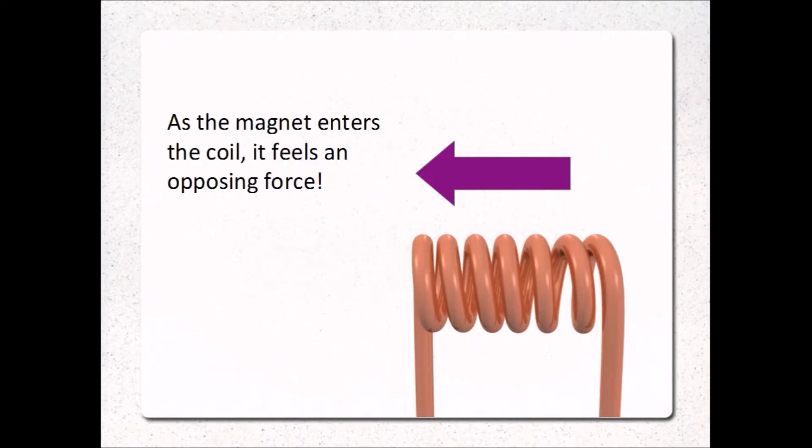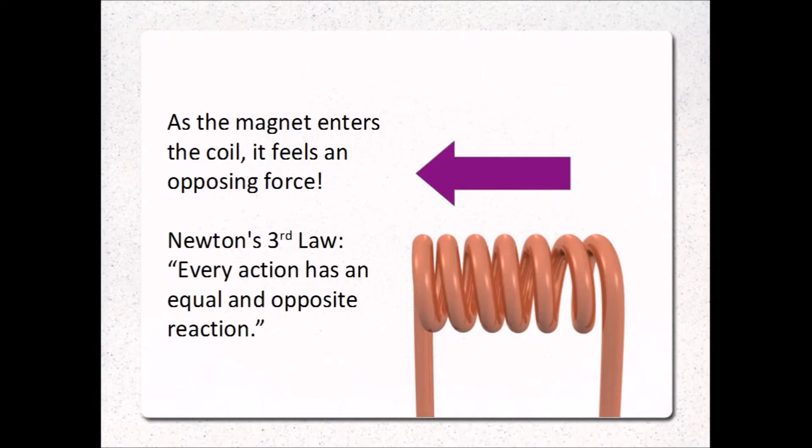It's to do with Newton's third law, which says that every action has an equal and opposite reaction. As the magnet is pushed into the coil, it produces an equal and opposite force to provide balance. Another way of saying this is that forces come in pairs.